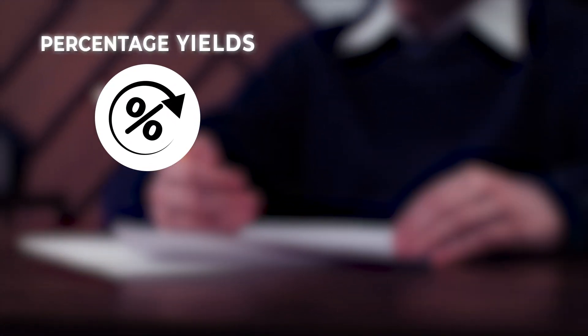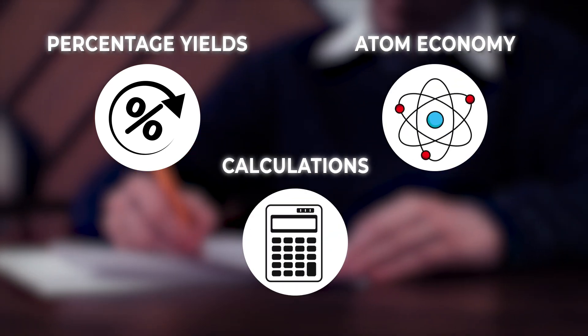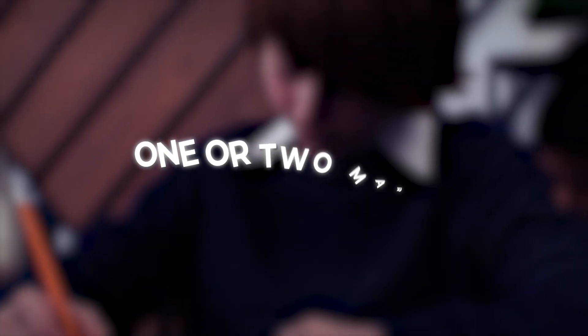As well as this, make sure that you know percentage yields and atom economy and especially how to make calculations on them because this could come up and this could be an easy one or two marks if you're able to make the calculation. And it can be very quick if you know what you're doing.